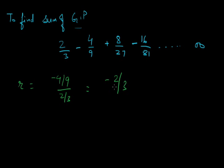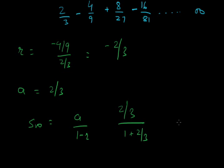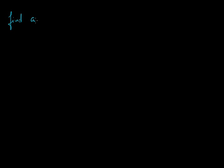Since |R| = 2/3 is less than 1, we can apply the infinite GP formula. The first term A is 2/3 and R is −2/3. Applying the formula S = A/(1 − R): S = (2/3) / (1 + 2/3) = (2/3) / (5/3) = 2/5. Hence the sum of this infinite GP is 2/5.